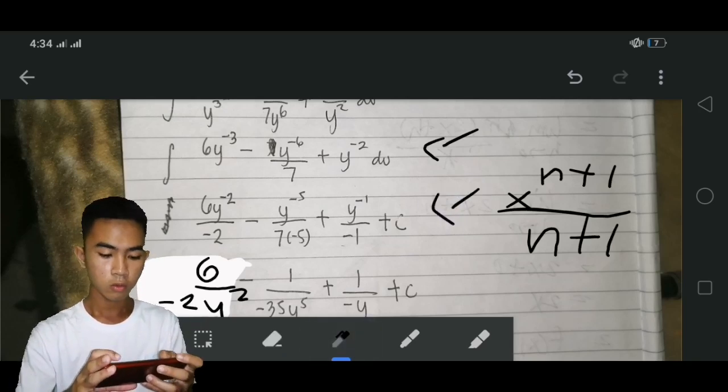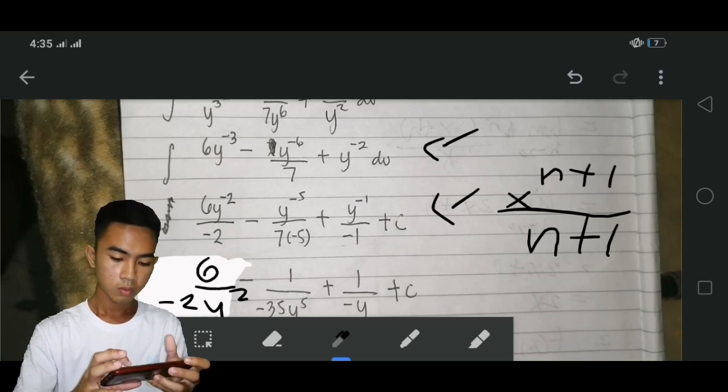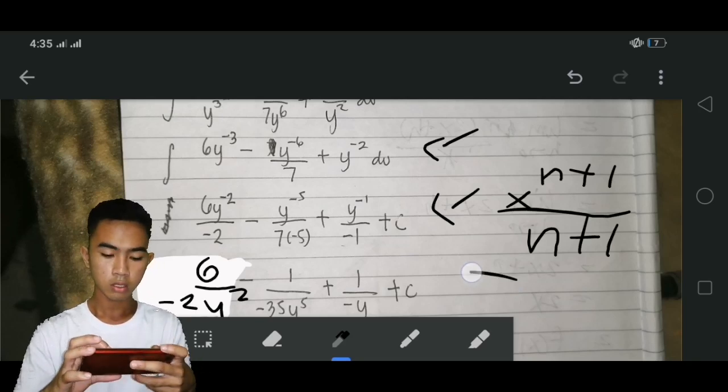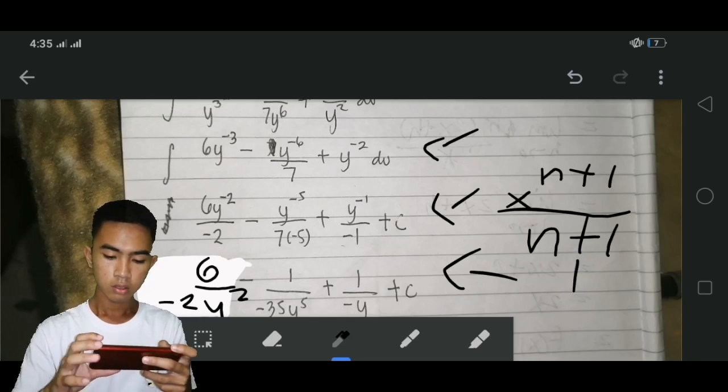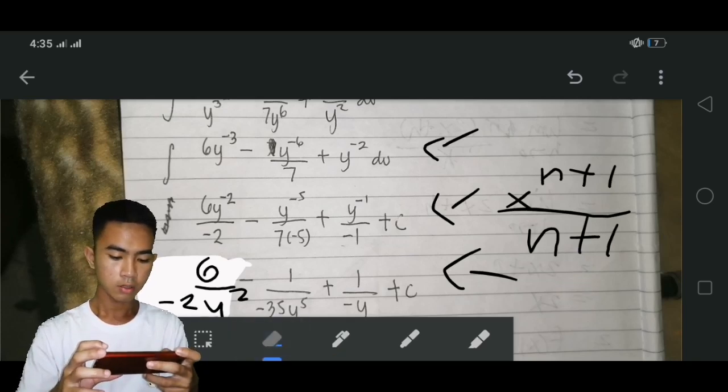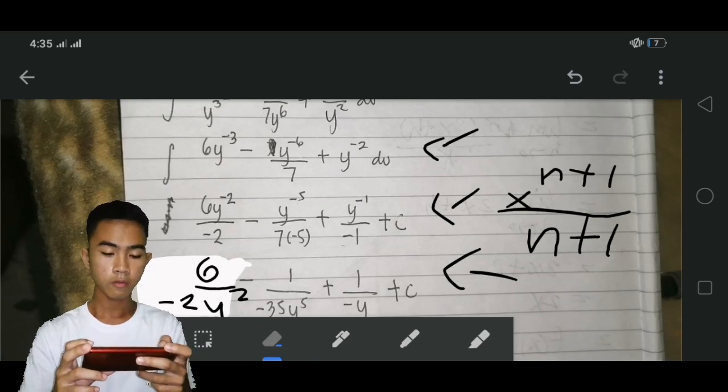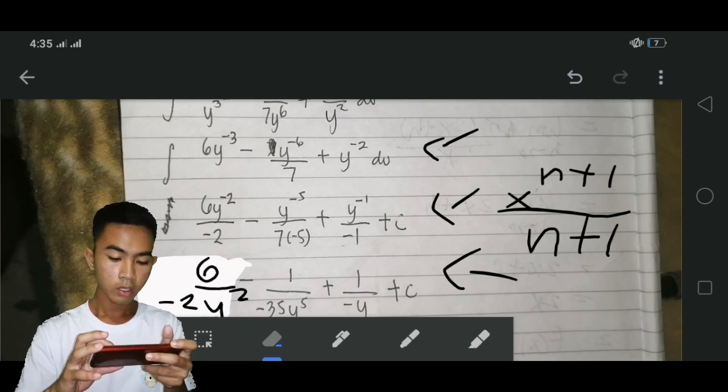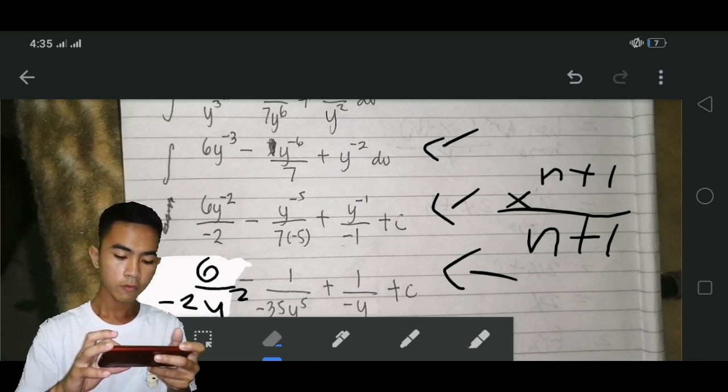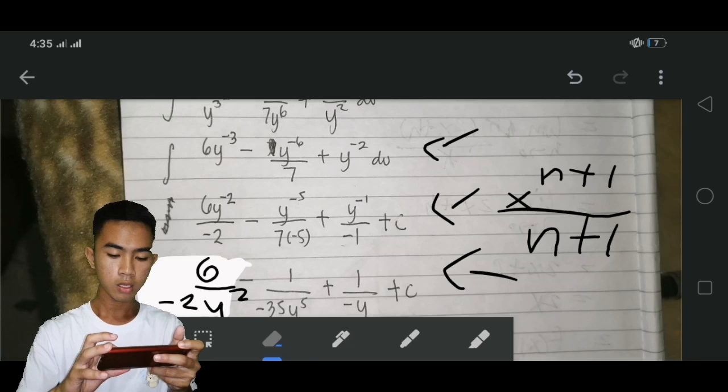Next, we have to put the denominator into the numerator. And this will be the final answer: negative 6 over negative 2y squared minus 1 over negative 35y to the 5 plus 1 over negative y plus c.